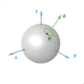A rotation is different from other types of motions: translations, which have no fixed points, and reflections, each of them having an entire dimensional flat of fixed points in an n-dimensional space. A clockwise rotation is a negative magnitude, so a counterclockwise turn has a positive magnitude.